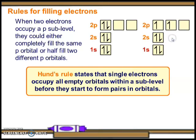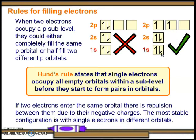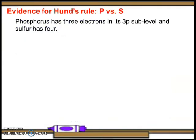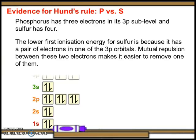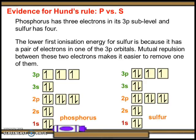If two electrons enter the same orbital there is repulsion between them due to their negative charges — the most stable configuration has single electrons in different orbitals. Evidence for Hund's rule: phosphorus has one electron in each of the three 3p sub level orbitals, while sulfur has four. Sulfur's lower first ionization energy is because it has a pair of electrons in one of the 3p orbitals; mutual repulsion between these two electrons makes it easier to remove one of them.